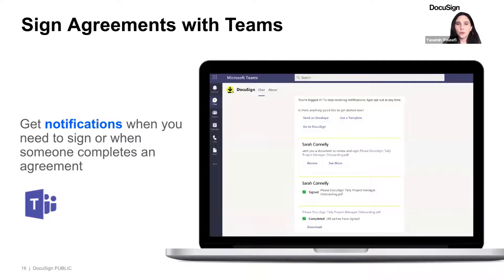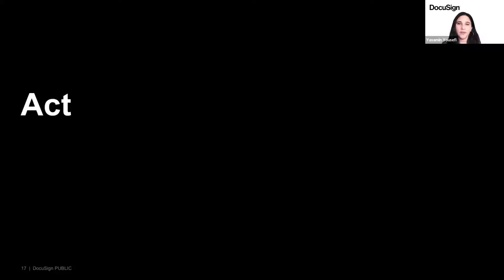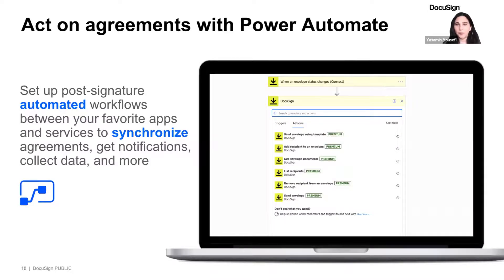Using DocuSign and Microsoft at the sign stage isn't just limited to Teams — you can also do this via Outlook and SharePoint and within other apps as well. Now let's move on to the next step: how you can act on agreements. Once an agreement has been prepared and signed with eSignature, one way to act on it is by leveraging eSignature for Microsoft Power Automate. With this integration, you can use Power Automate to automate post-signature tasks based on metadata in the agreement, like field data. You can synchronize files, get notifications, collect data, and more — all without code or complex implementations.